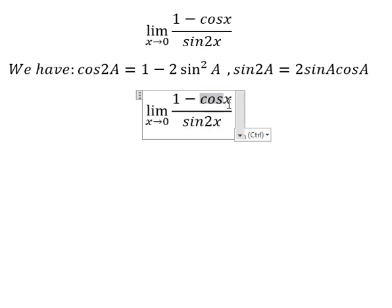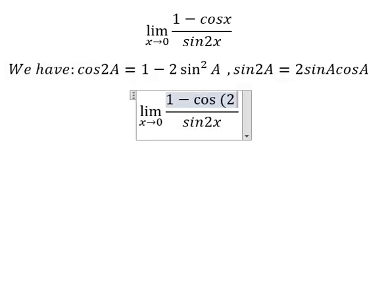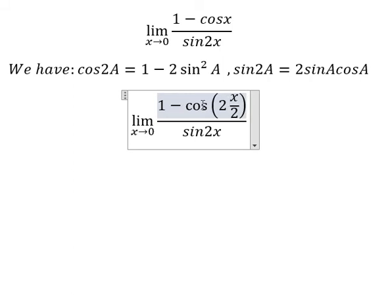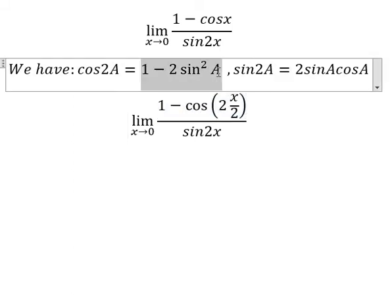About cosine x, that is about number 2 multiplied by x over 2. So we need to transform this one into this one.